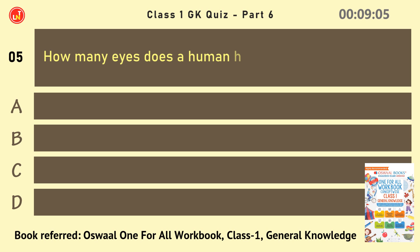How many eyes does a human have? Answer: 2.